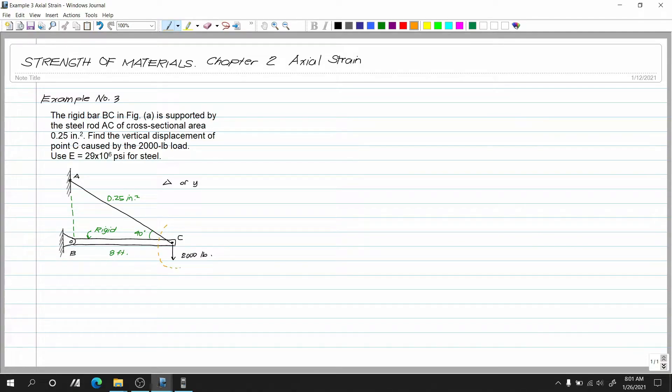Summit na lang tayo ng method of joints. Ayan. Kapunin natin ito. So ngayon, ito yung ating BC. Ito yung ating cable. Ayan. So syempre, tensile ito. Sabi natin ito ay AC. Ayan. Ito naman yung BC. So obvious naman yung ating BC is compressive kasi kailangan natin ma-resist yung tension dito.